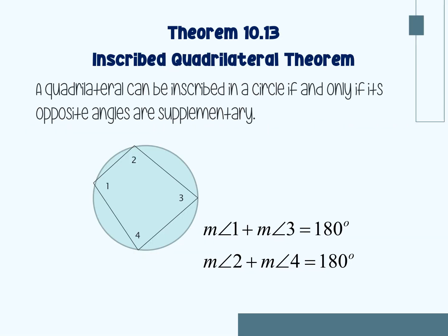The next theorem is called the inscribed quadrilateral theorem. It states that a quadrilateral can be inscribed in a circle if and only if its opposite angles are supplementary. It's just a four-sided shape, and the opposite angles are supplementary. So angle one plus angle three equals 180, and angle two plus angle four also equals 180 because these are opposite angles.